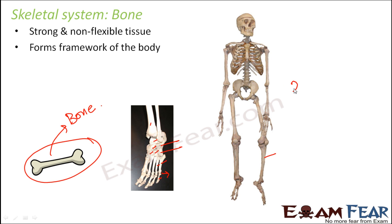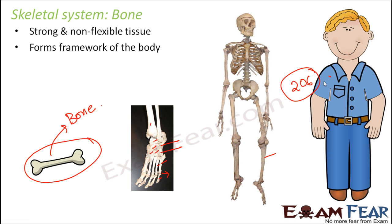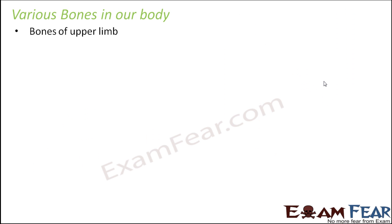In an adult there are 206 bones. The skeletal system is covered by skin and tissues, because of which it is not visible.